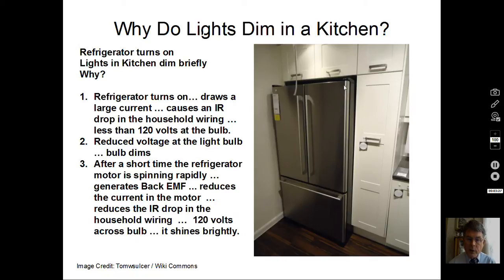There's been a voltage drop from the high current in the household wiring. Not a dangerous current, it's not a dangerous amount of time. The circuit breaker would trip if it was a problem. But there is an IR drop, V equals IR drop in the wiring. So there's less than 120 volts across the light bulb. The light bulb doesn't put out as much light.